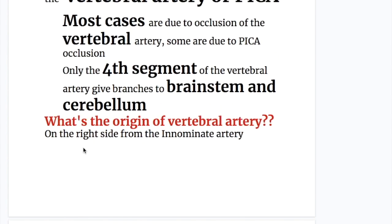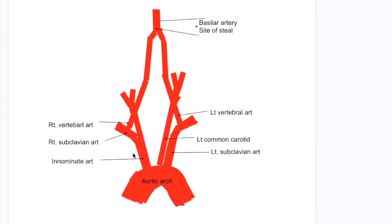Only the fourth segment of the vertebral artery gives branches to the brainstem and cerebellum. What's the origin of the vertebral artery? On the right side it arises from the innominate artery, and on the left side it arises from the subclavian artery.